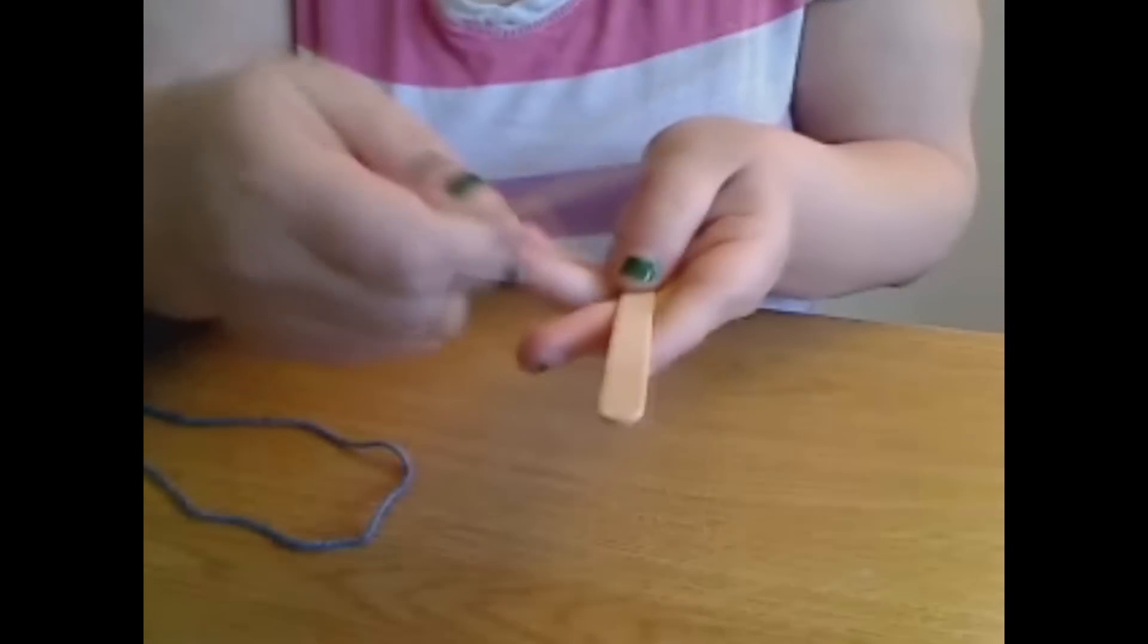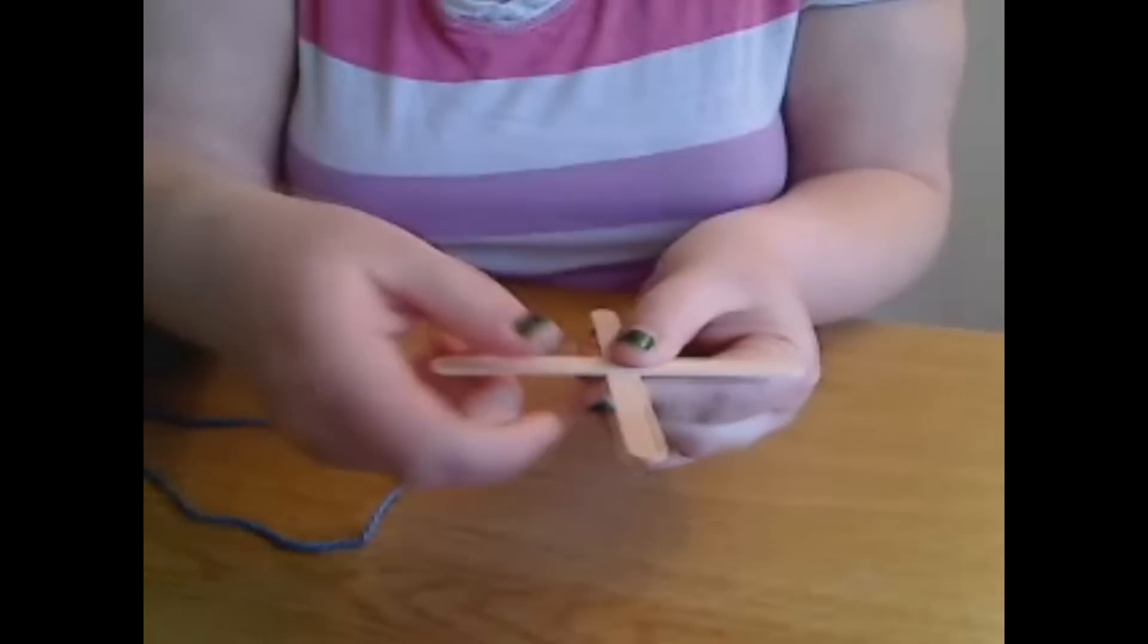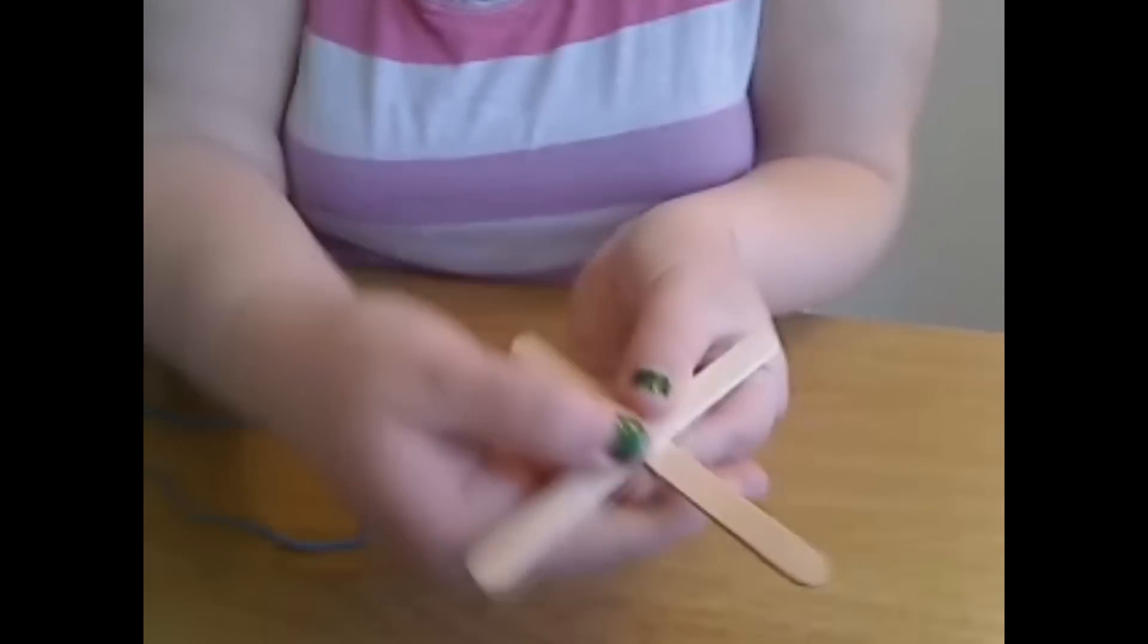and yarn in any color of your choice. To begin, take both your popsicle sticks and cross them over to make a cross or an X shape.